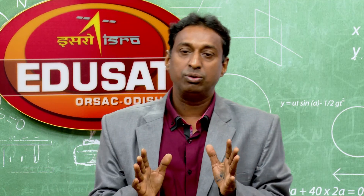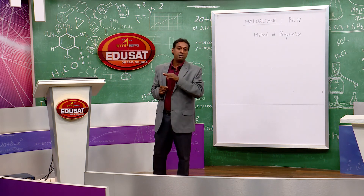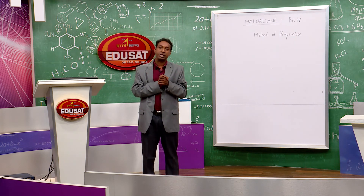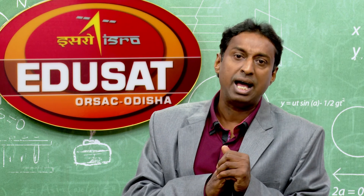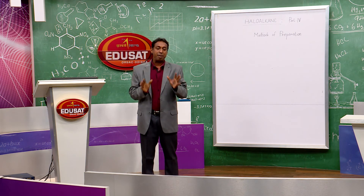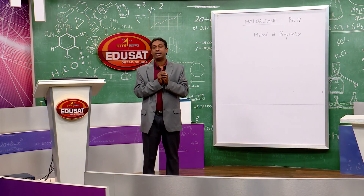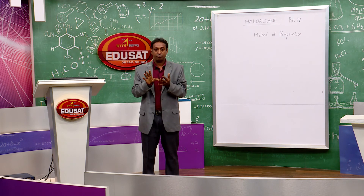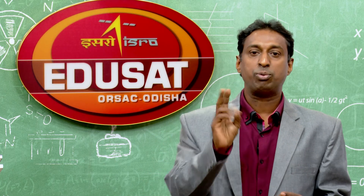Summary of alcohol methods: hydrogen halide (HX) method, PX5 or PX3 method, and thionyl chloride (SOCl2) method — the SOCl2 (Darzens) method is the best for preparing a pure alkyl chloride. The reactivity order of alcohols: 3° > 2° > 1°.